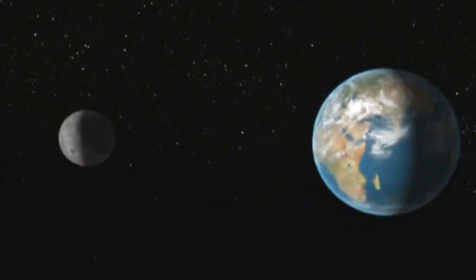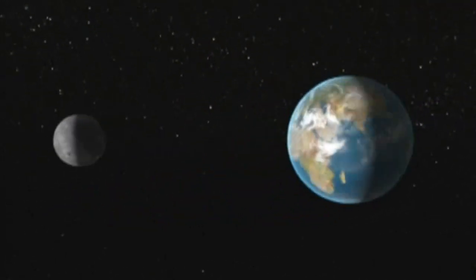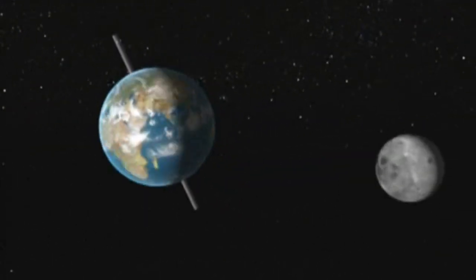One-fourth the size of the Earth, the Moon's powerful gravitational pull stabilizes the angle of its axis at a nearly constant 23.5 degrees.